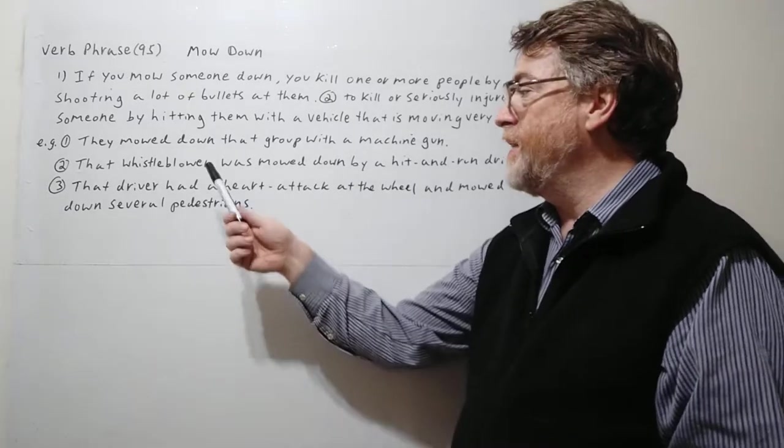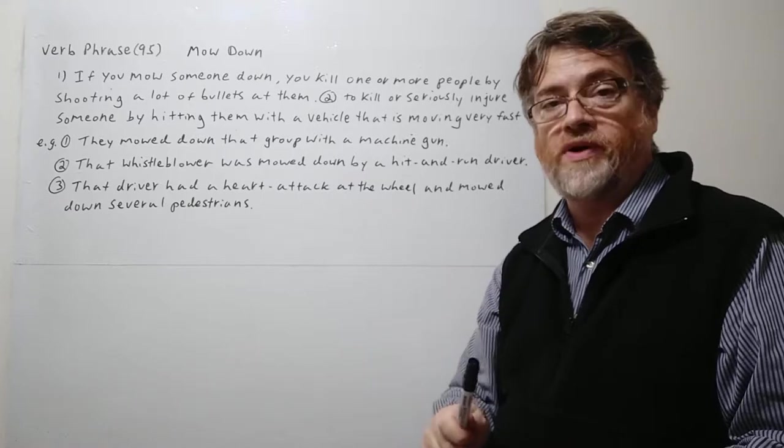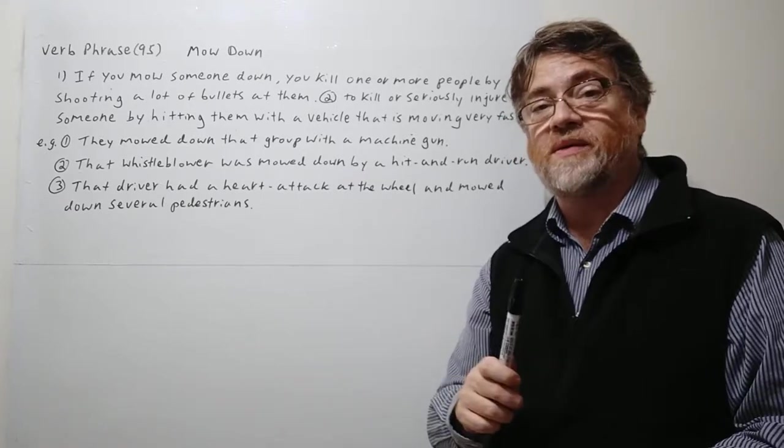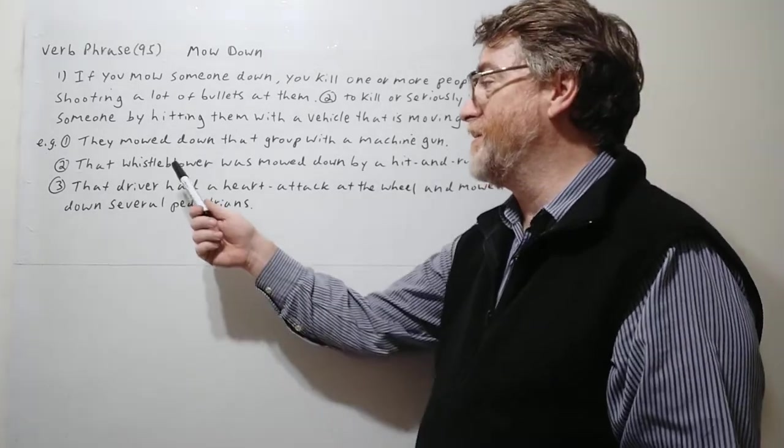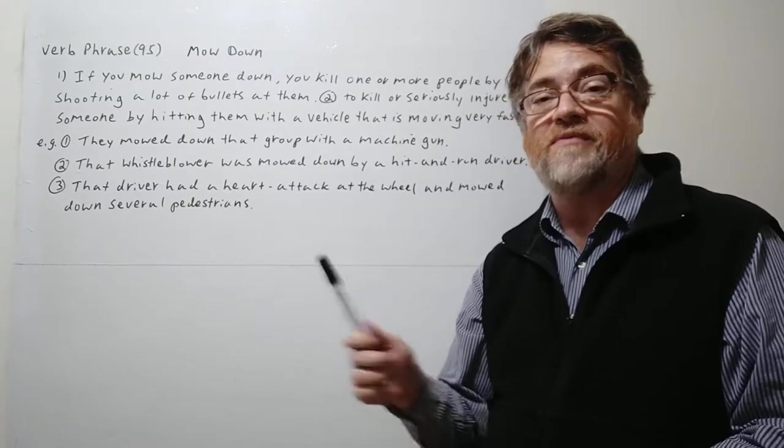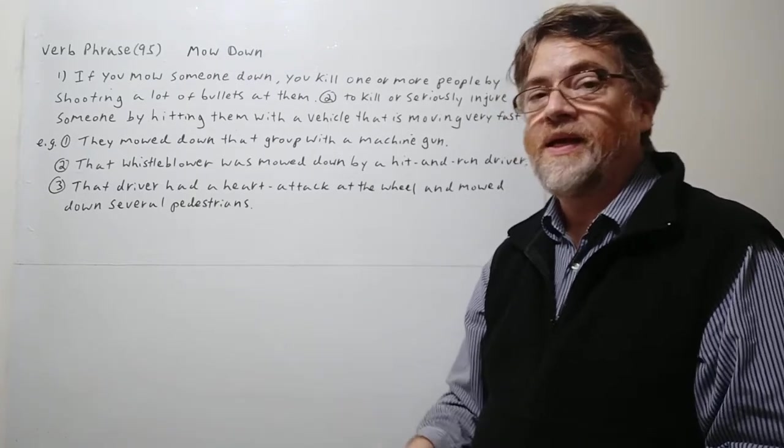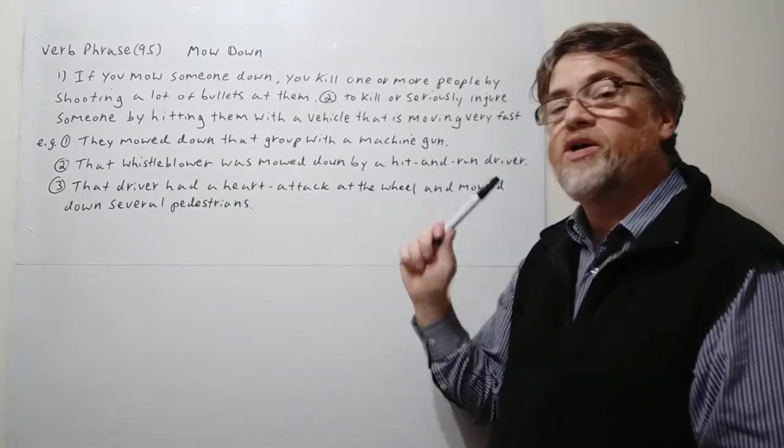Let's look at number two. That whistleblower was mowed down by a hit-and-run driver. Maybe sometimes some group, some company, or maybe some government agency, maybe they want to get rid of this whistleblower. So this might be a way of trying to kill him and make it look like an accident.